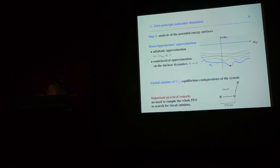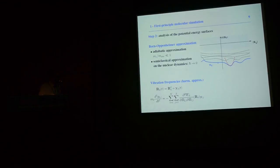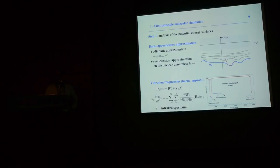Once we know the global minimum — the equilibrium geometry of the molecule — we can linearize the dynamics around it. We obtain a harmonic dynamical system. The Hessian matrix is degenerate because the system is invariant with respect to rotation and translations, making zero a six-fold degenerate eigenvalue. But we still have 3M−6 positive eigenvalues. These positive eigenvalues correspond physically to the peaks in the infrared spectrum of the molecule.